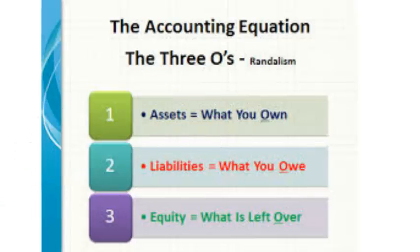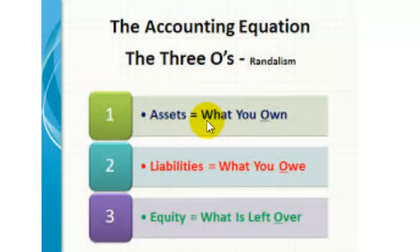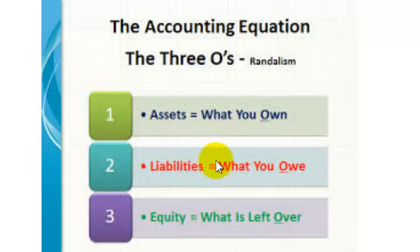Another way of looking at it is what I call the three O's. Assets are what you own, liabilities are what you owe, and then the difference between those two is the equity that you have — what is left over.